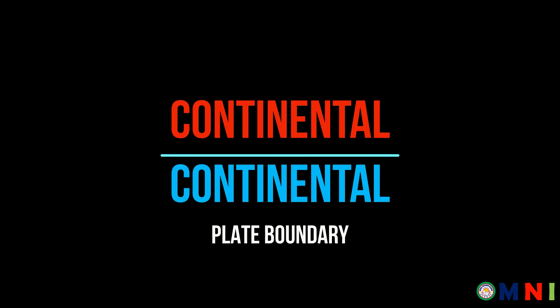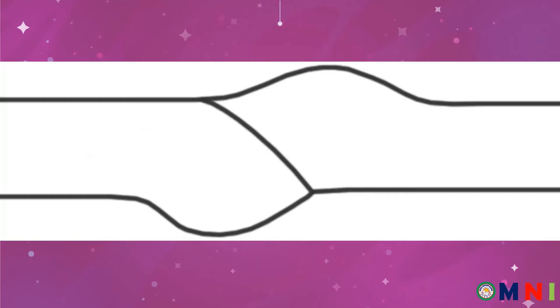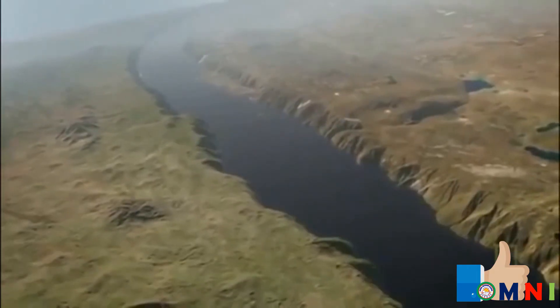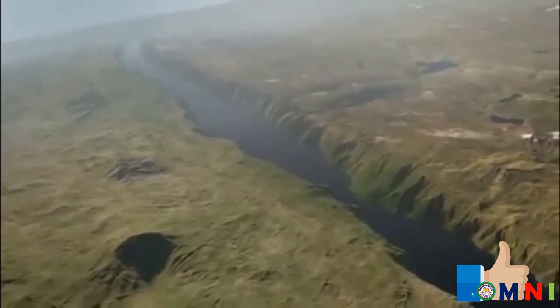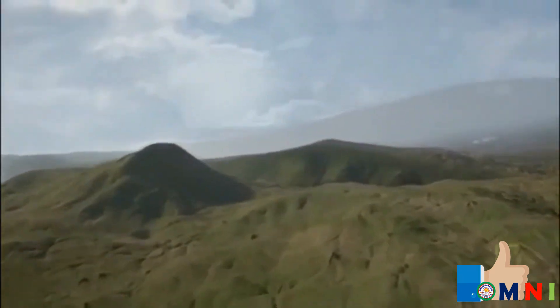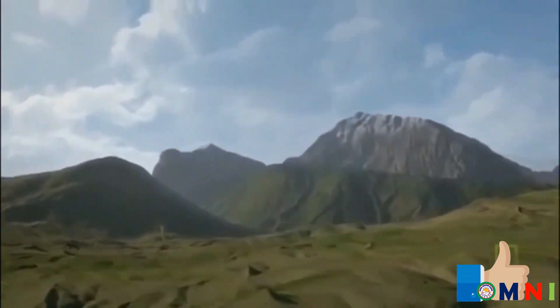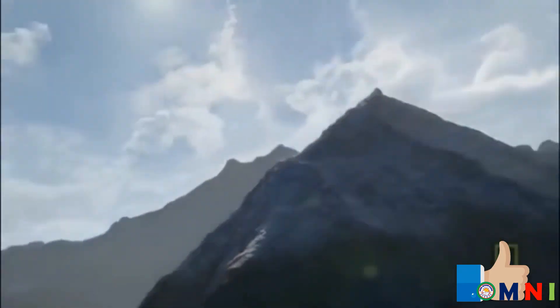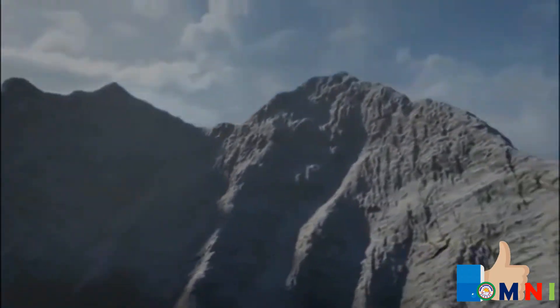The third type of convergent boundary is the continental-continental convergent plate boundary. This occurs when the two plates moving towards each other form a collision. Unlike the other two types of convergent boundaries, no plate moves or slides under the other — no trench, no volcano, and definitely no island arc is created. Instead, what is created is a large group of tall mountains called a mountain range. This explains how the Himalayan peaks were formed, due to the continuous pressure pushing the crusts upward.